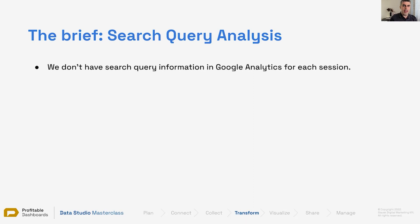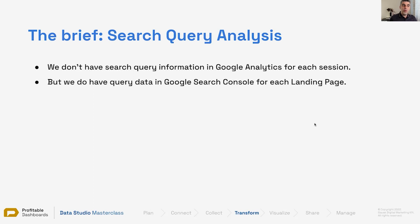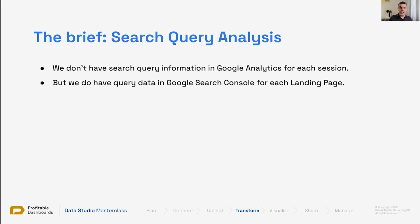So where do we have our search queries? Where do we have our web data? We all know that we don't have search query information in Google Analytics for each session — we get that 'not provided.' Google doesn't allow us to see which keyword brought traffic to a session. But we do have query data in Google Search Console, where we can see which query resulted in how many impressions and clicks.